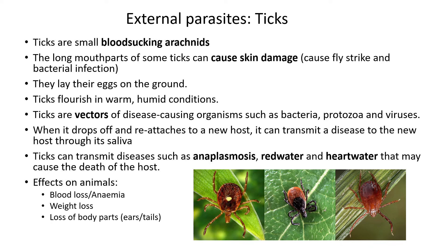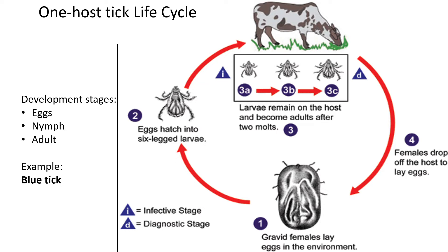What you need to remember is that there are three life cycle types, and you have to be able to identify ticks based on the life cycle shown. The first type is called a one-host tick.